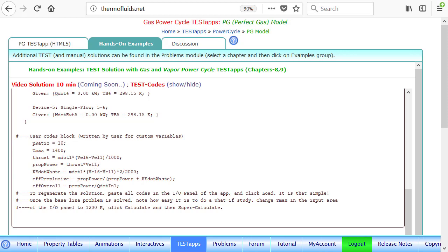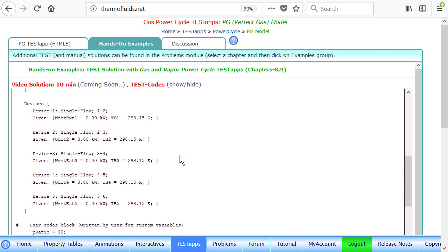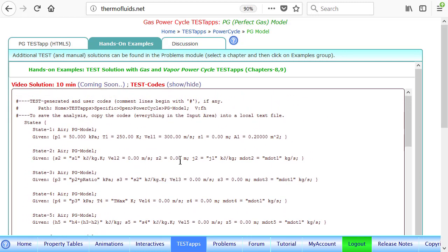So as you can see, the thrust and propulsive power, propulsive efficiency, etc., can be calculated in the I/O panel once all the states have been calculated for this jet engine. Pretty much it follows like a simple gas turbine.